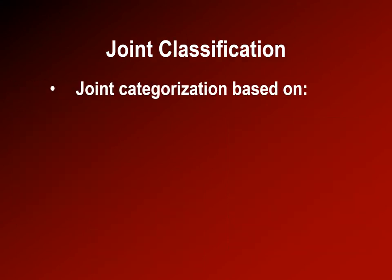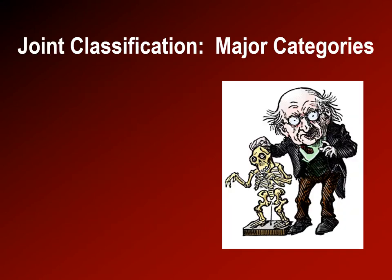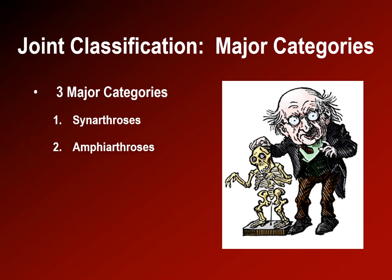Joints can be categorized based upon their mobility, the connective tissue involved and the properties of that connective tissue, and the joint surface. There are three major categories of joints: the synarthroses, the amphiarthroses, and the fully diarthrodial joints, which are meant to move freely.